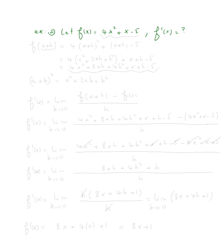Just like in the previous example, we always start by calculating f of x plus h. Now f of x plus h — how do we find it? Wherever we see x, we replace it by x plus h. So because the input is x plus h, this is going to be four times our input squared plus our input minus five.